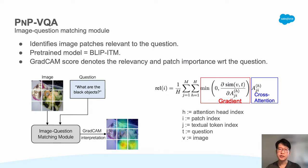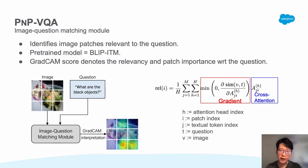An image is a rich source of information and the question is often focused on a particular region or object. Therefore, we design an image-question matching module to identify image patches that are relevant to the question. The pre-trained model we adopt is BLIP-ITM, a vision-language model trained to determine whether a text matches an image. We adopt a variant of GradCAM, which scores the relevancy and patch importance with respect to the question. Given an image and a question, we obtain the gradient from the cross-entropy loss, and the gradients are used as weights when aggregating cross-attention maps for all tokens.